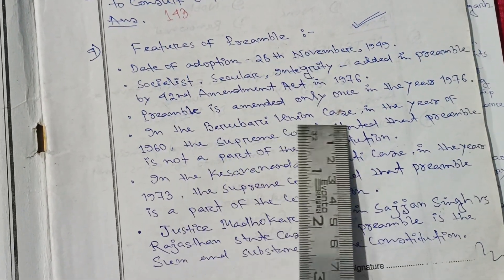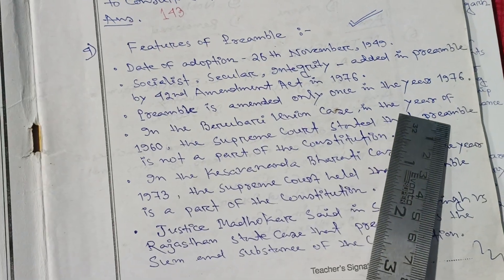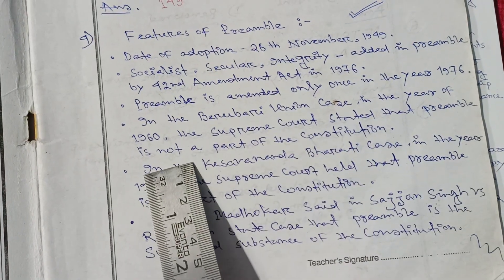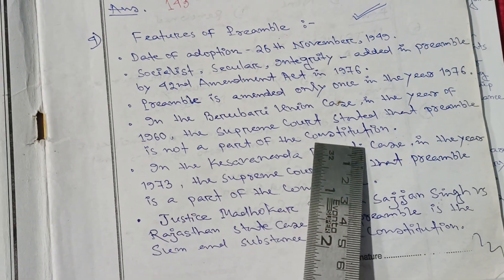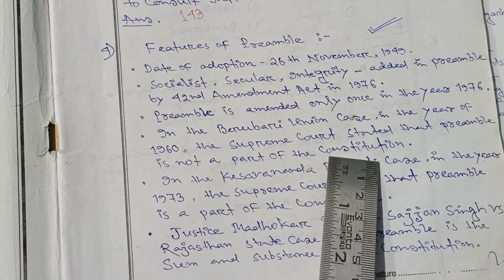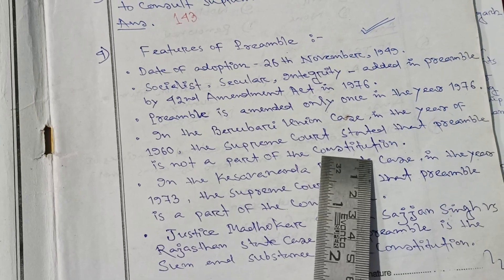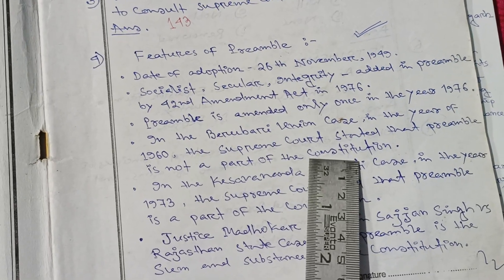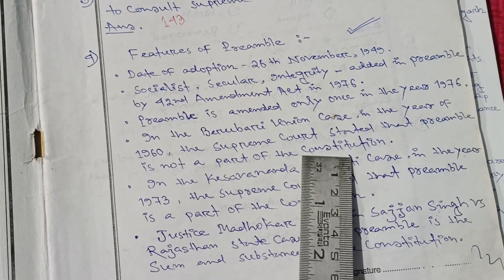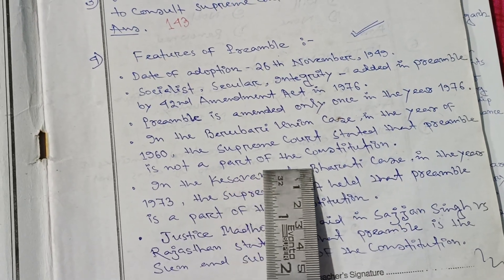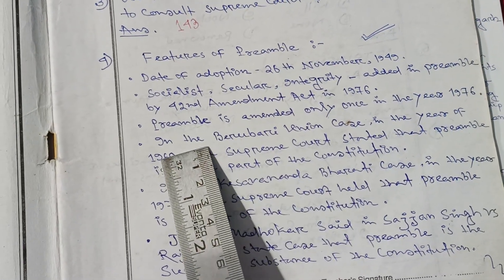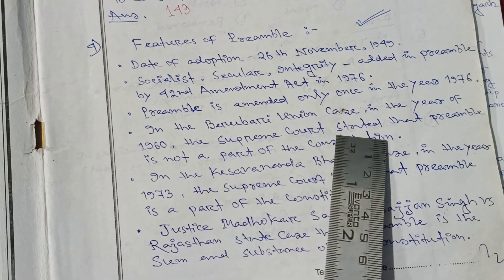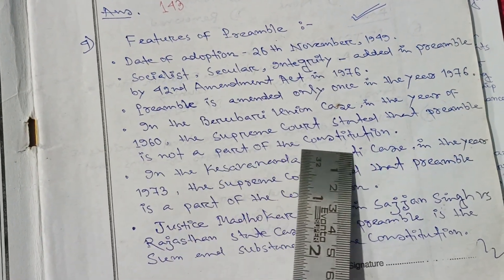In the Beru-Bari Union case in the year 1960, the Supreme Court stated that the Preamble is not a part of the Constitution. This is a very important point, frequently asked in competitive examinations: in which case or year did the Supreme Court state that the Preamble is not a part of the Constitution? The answer is: in the Beru-Bari Union case, 1960.